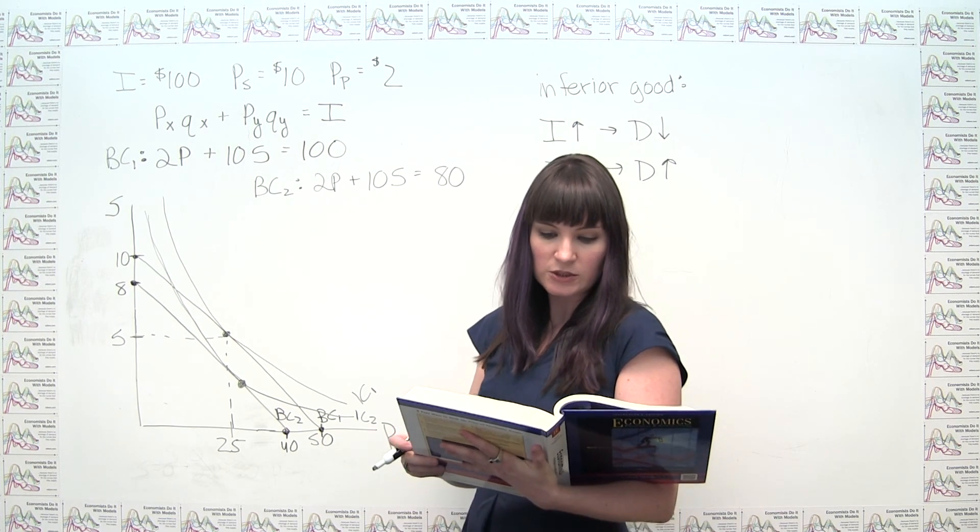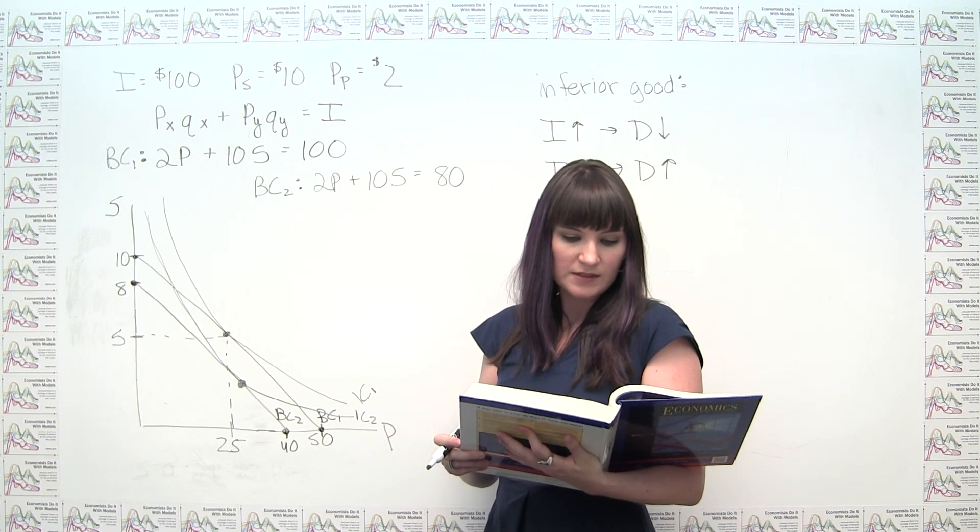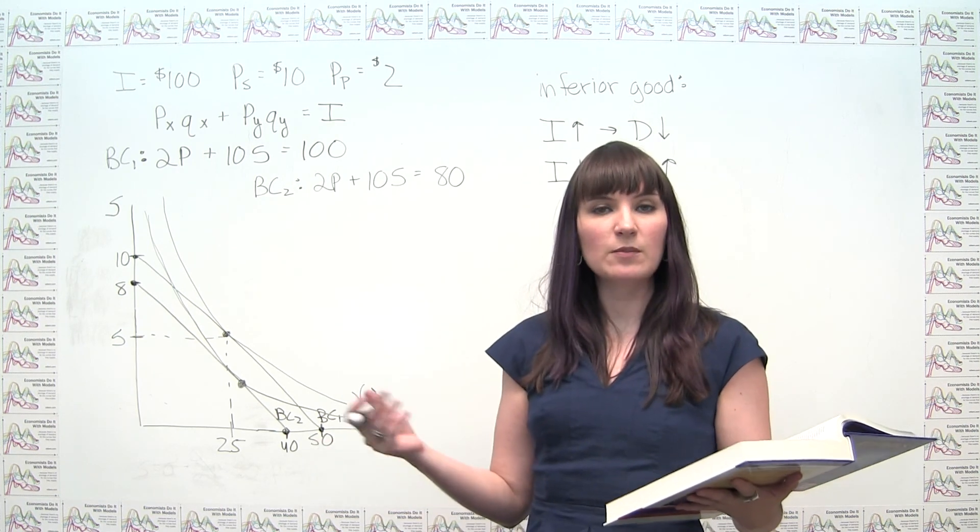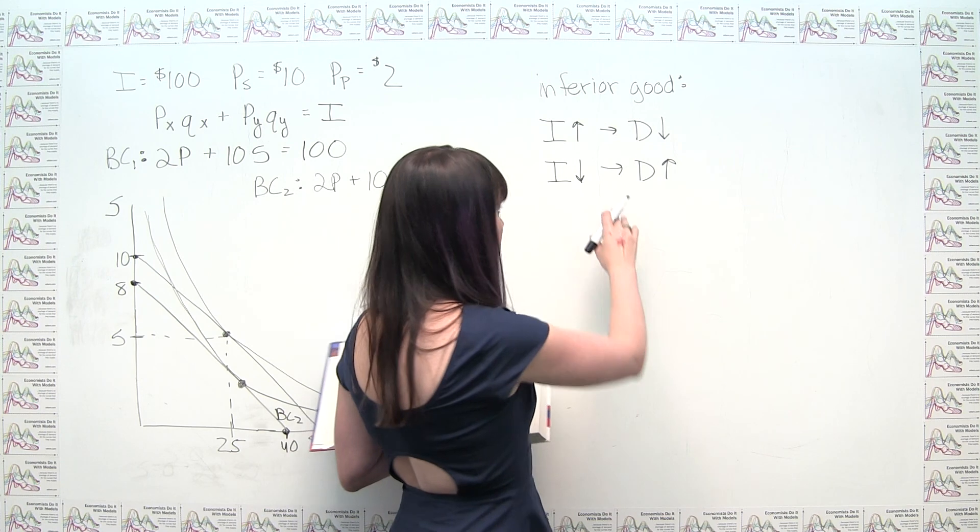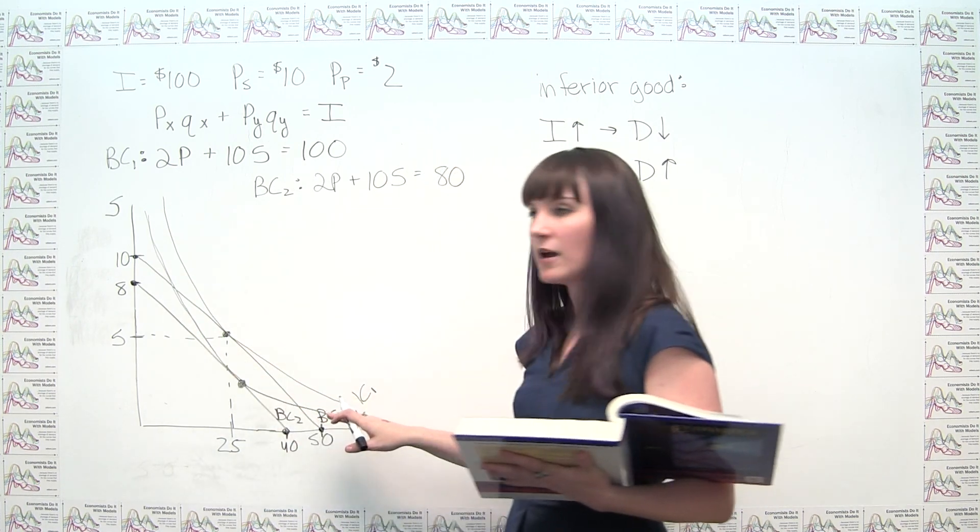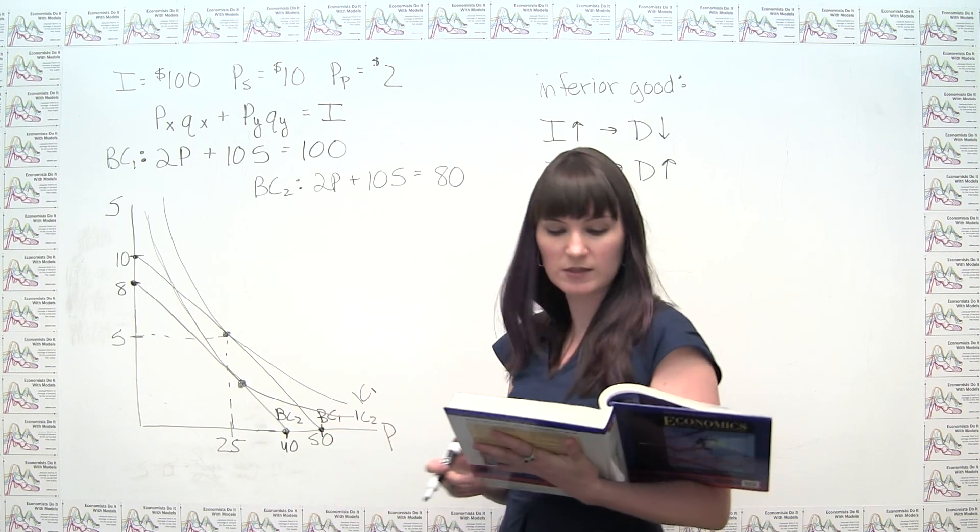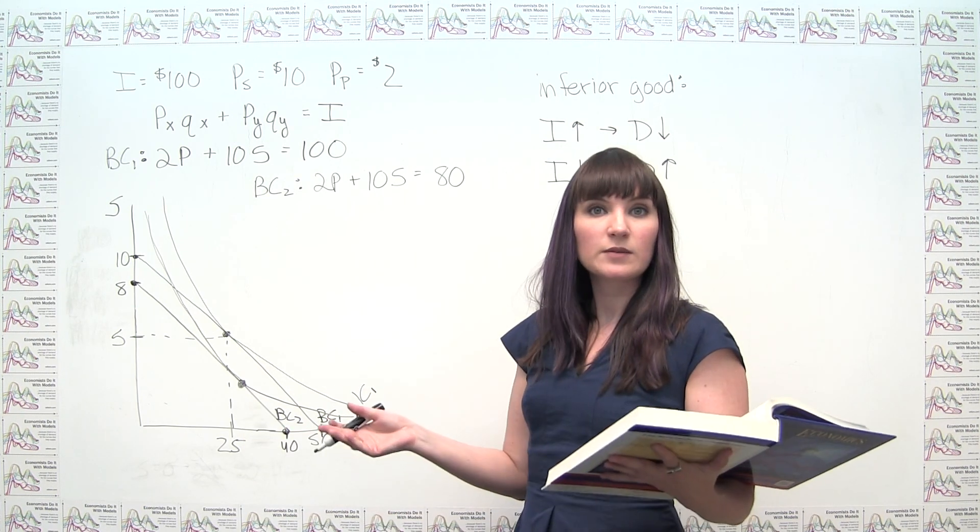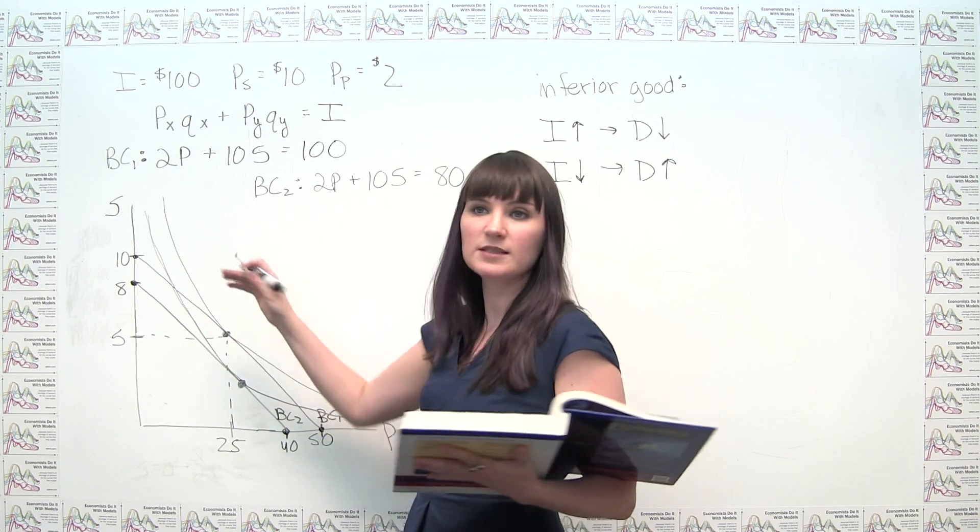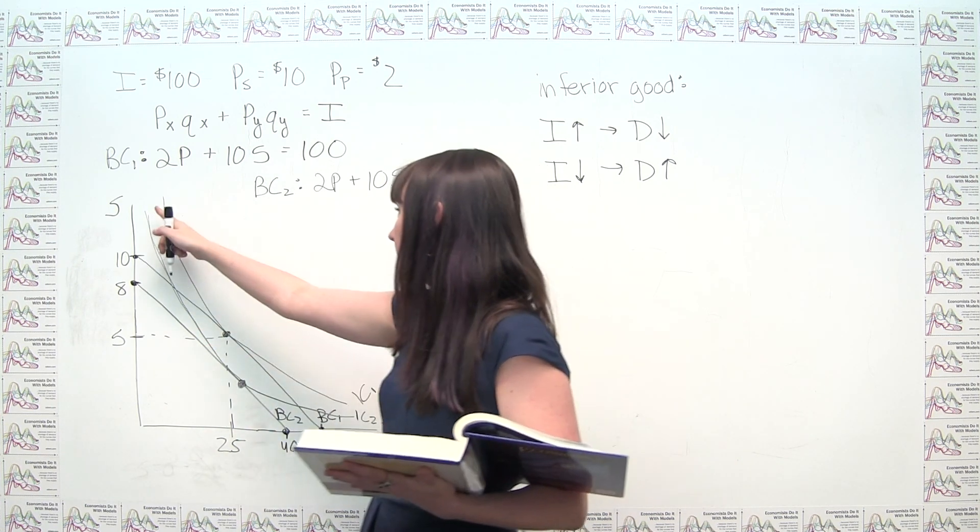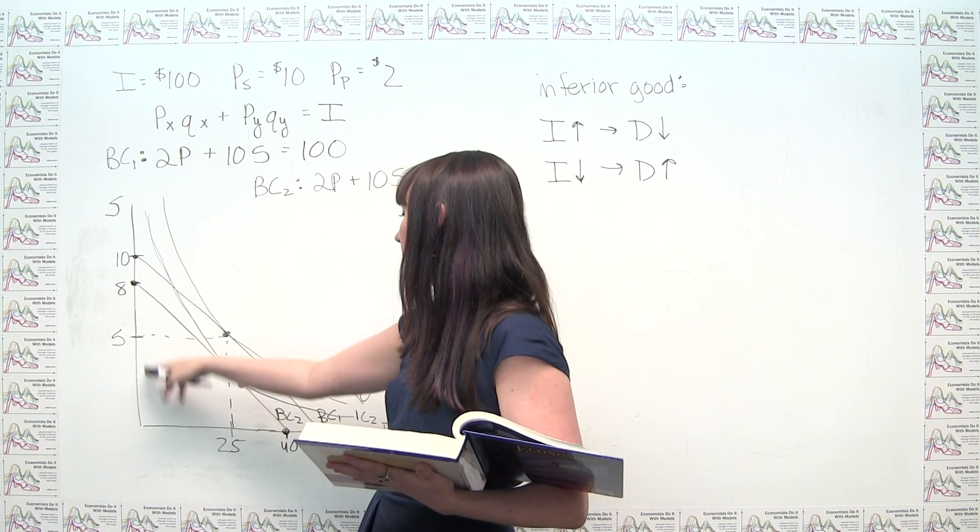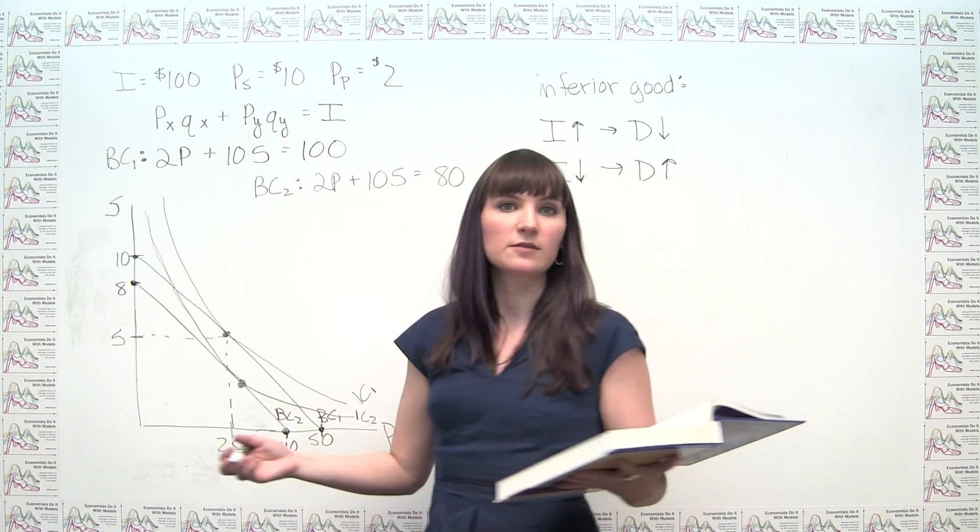Now, the last part of the question says what will happen to Cameron's potato consumption. Well, we knew what was going to happen to Cameron's potato consumption simply from the definition of inferior good. We can also just read that from the graph here. Like we said, his potato consumption is going to increase. And we said, by definition, his steak consumption was going to decrease. Again, we can see that, because we've moved from five pounds of steak to some quantity here that's clearly less than five.